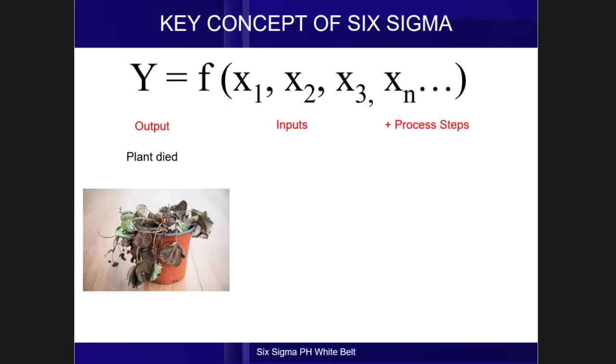Next is to identify the inputs and process steps, which are your Xs. The inputs in our example are the following: the quality of water, the quantity of water, the watering can, the plant, the plant pot, the garden soil used, and the location of the pot.